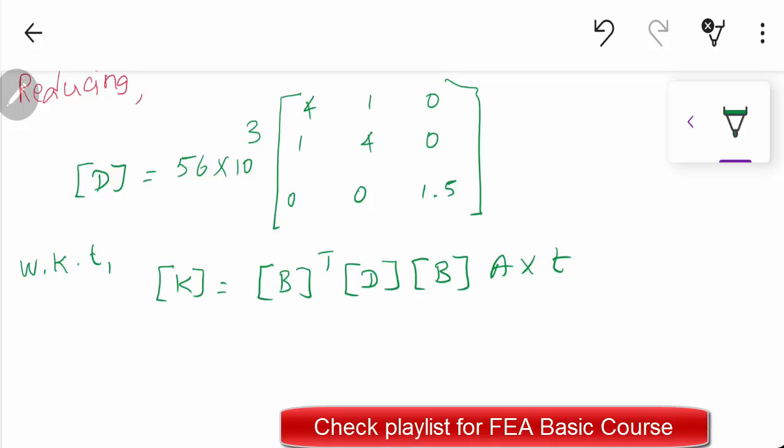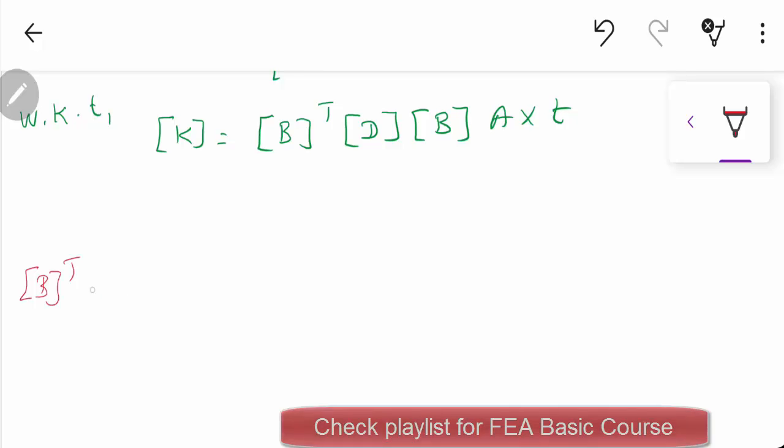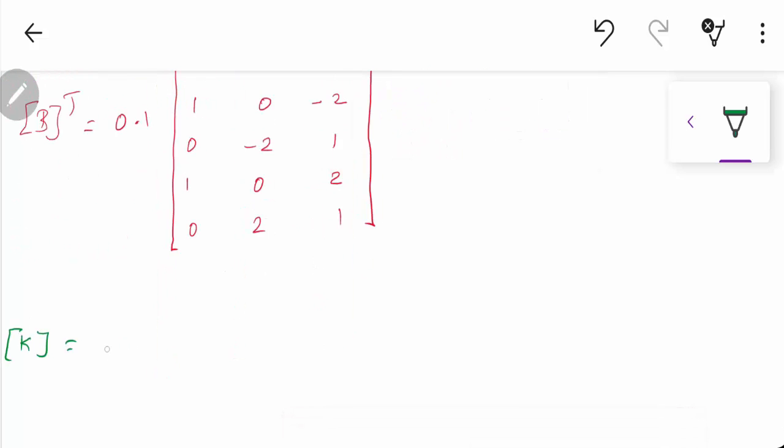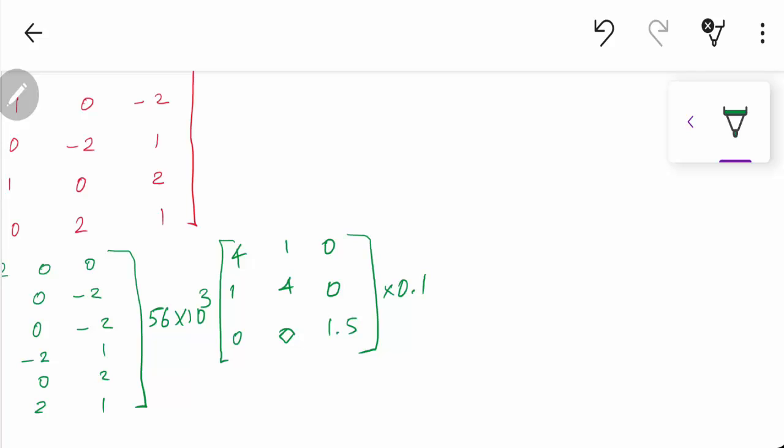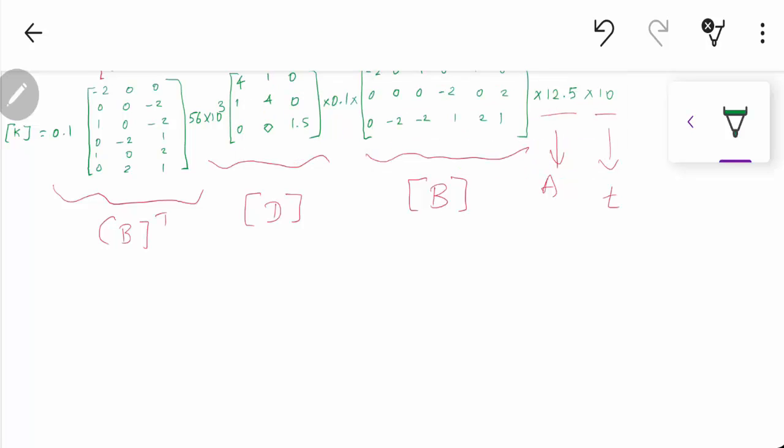This is the formula for calculating the stiffness matrix of this element. We have to find out the transpose for the strain displacement matrix. Write down the rows into columns. Substitute the B^T matrix, that is transpose of strain displacement matrix, and this is your D matrix, and this is your actual B matrix, strain displacement matrix, times area of the triangle times thickness of the element. Multiply all these values.